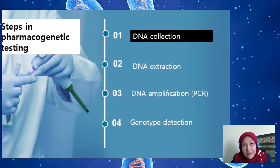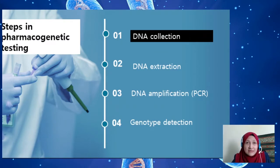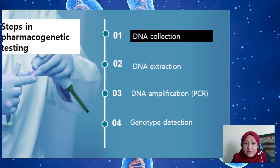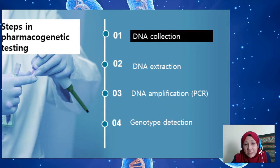There are four main steps in pharmacogenetic testing. First, you need to collect the DNA sample from the individuals of study. Second, you need to extract the DNA out of the whole blood sample. Third, DNA amplification is needed to multiply the DNA strands. And lastly is the genotype detection itself.